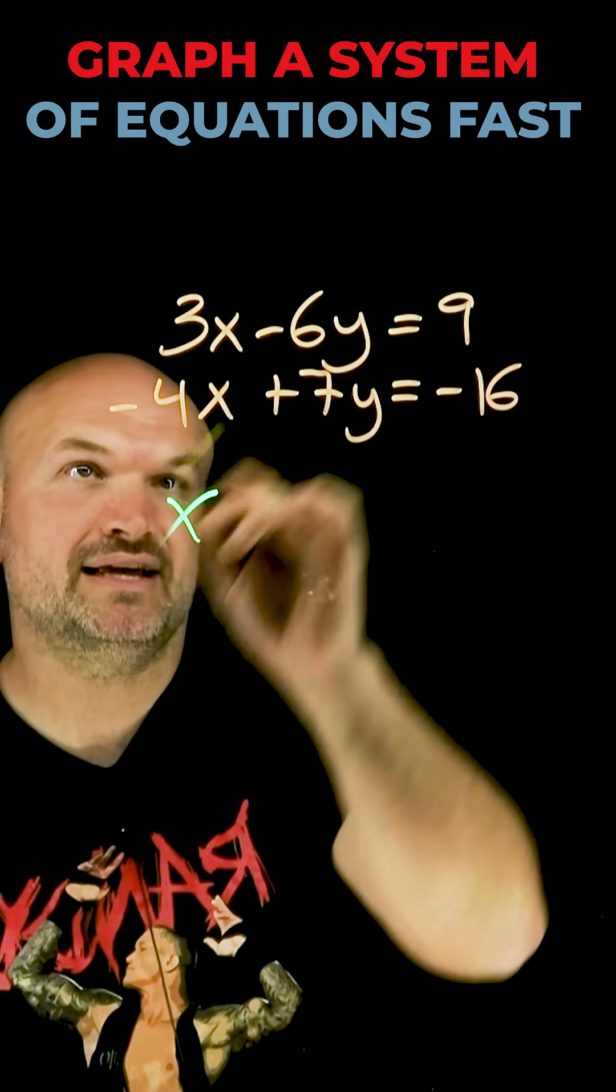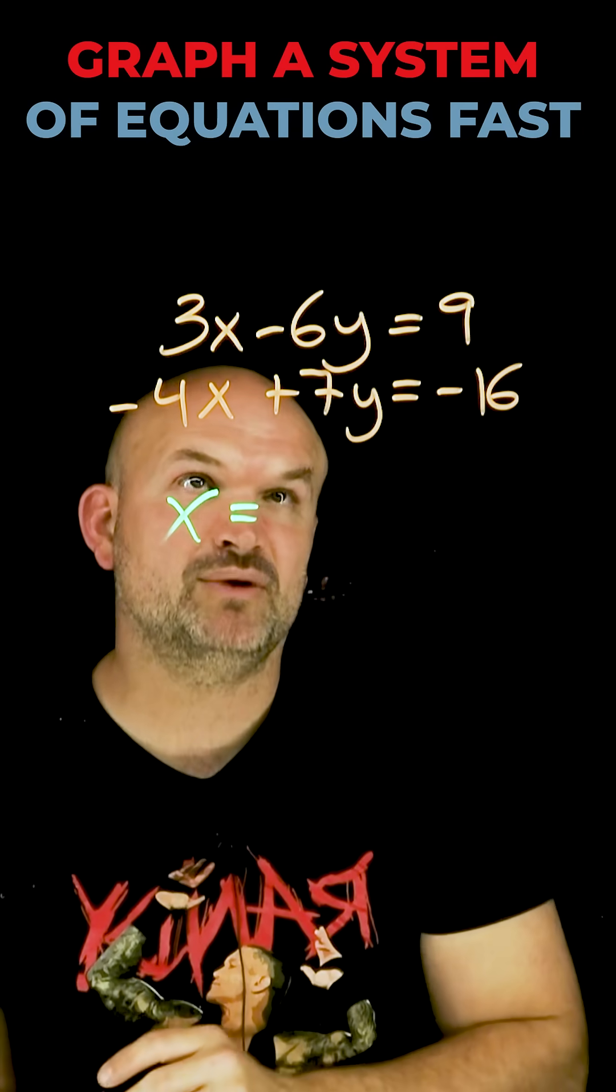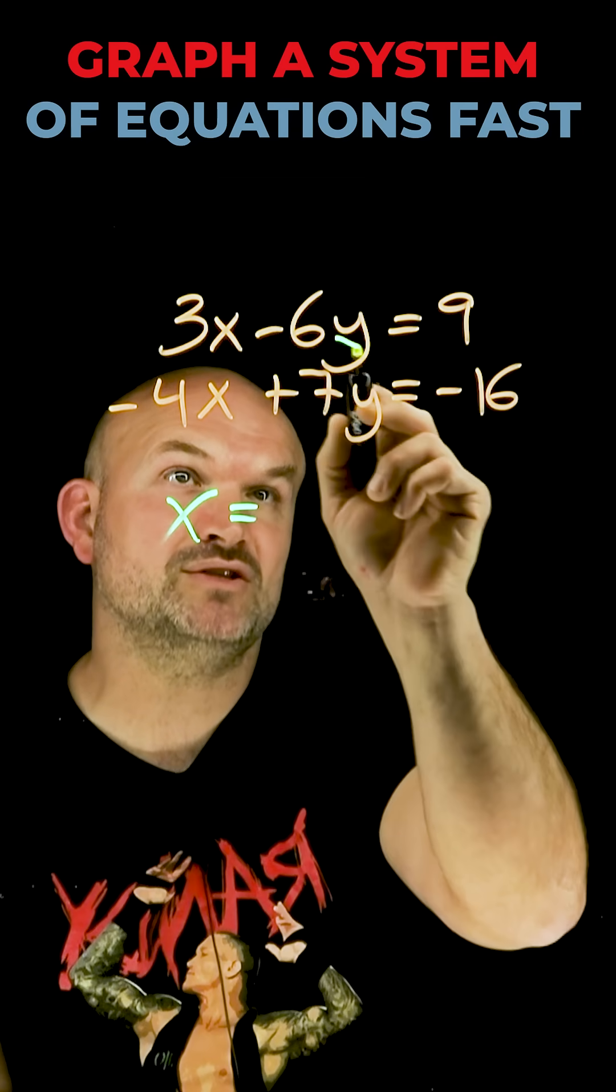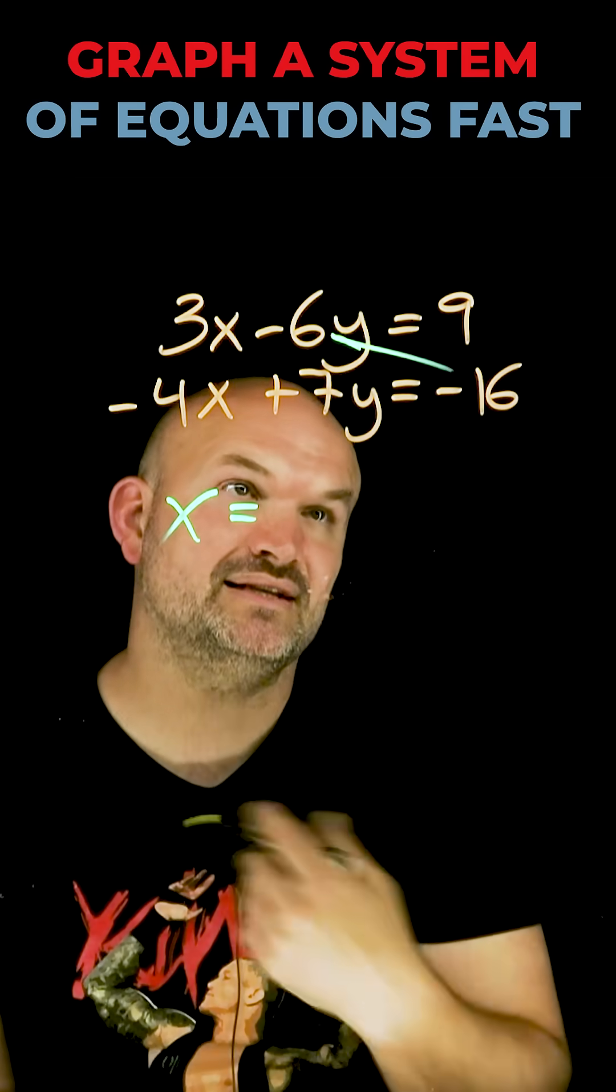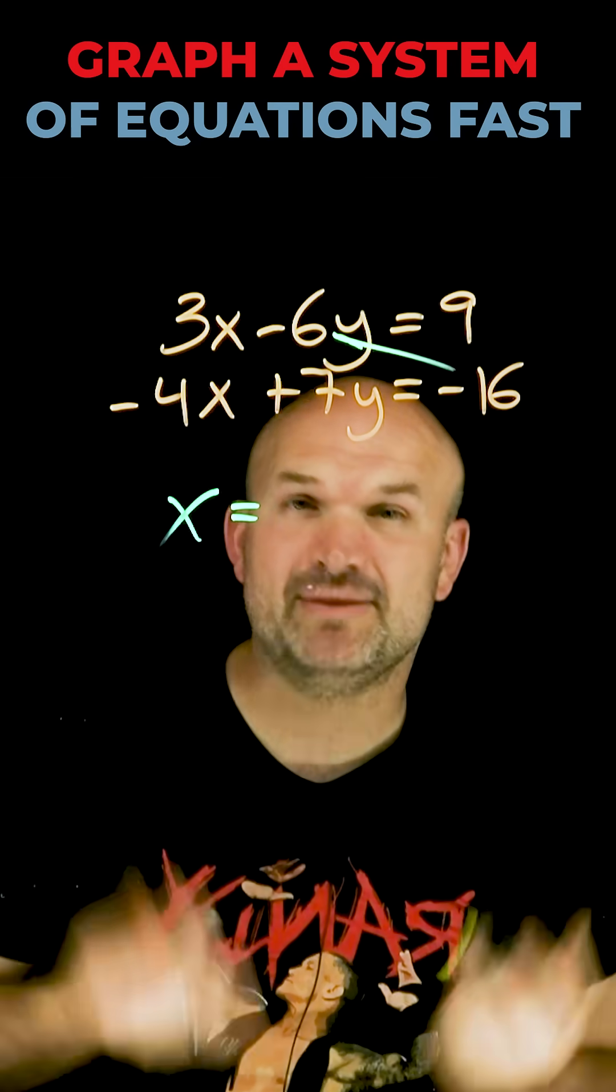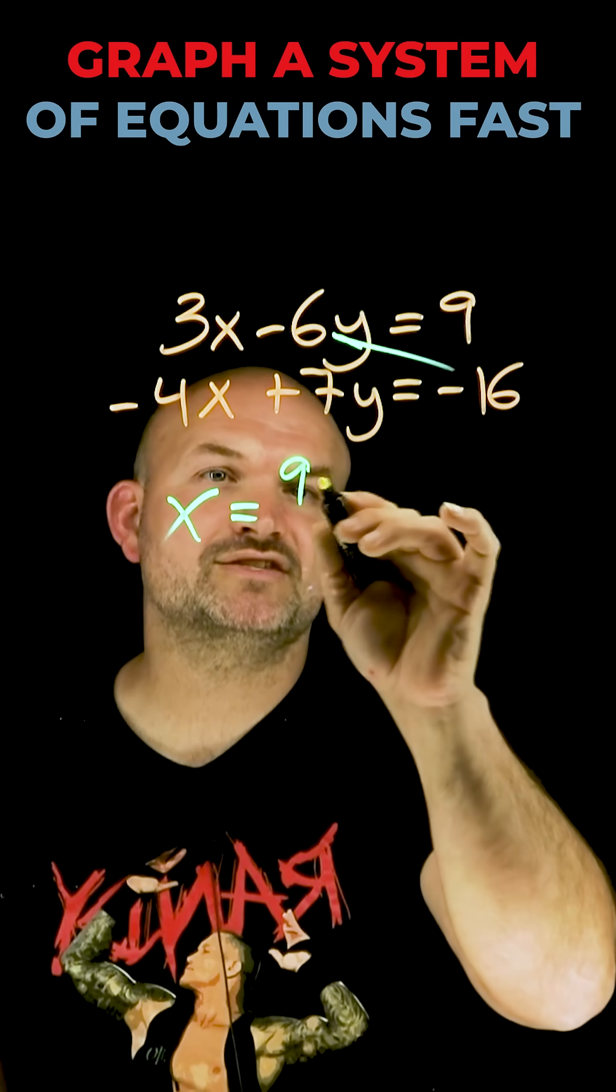All we're going to do is make sure our equation is in this format, and solve for variable x. To solve for x, I simply need to take this middle term, negative 6, and multiply by negative 16. Negative 6 times negative 16 is positive 96. So that's going to be 96.